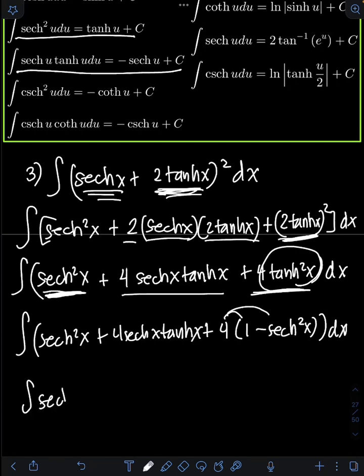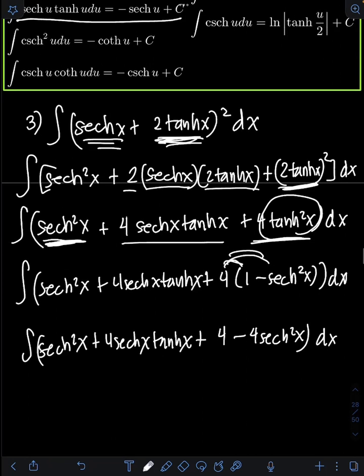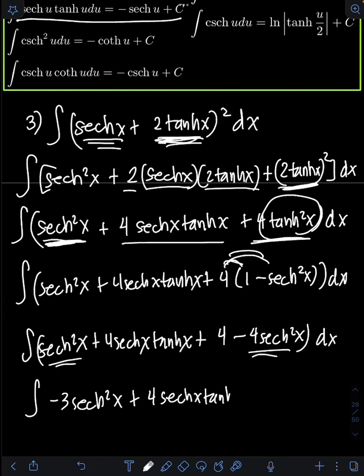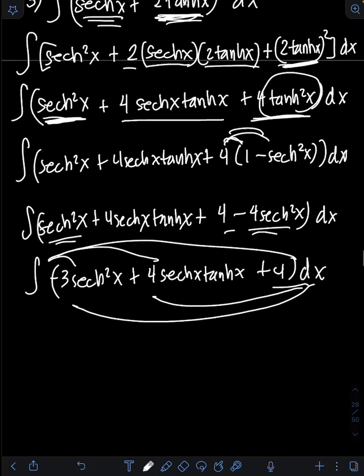Let's distribute the 4 first: the integral of sinh²(x) plus 4sinh(x)tanh(x) plus 4 times 1 minus 4 times sech²(x) dx. Notice we can combine sinh²(x) minus 4sech²(x): that equals negative 3 sech²(x). So we have the integral of negative 3 sech²(x) plus 4sinh(x)tanh(x) plus 4, dx.